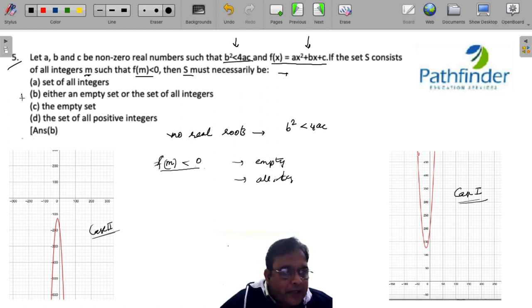So therefore, the answer is either it will be an empty set or a set of all integers. Now this was merely an observation question. It should have been done in 20 seconds flat if you recognize what all this meant.